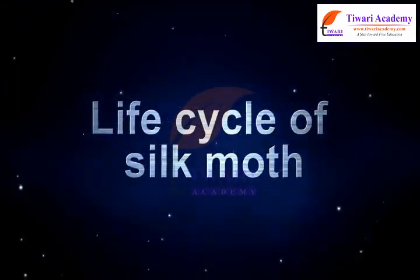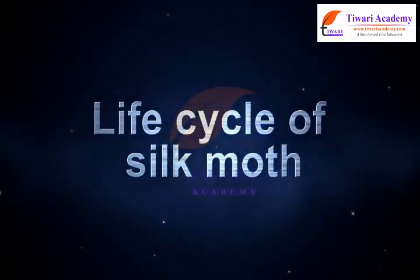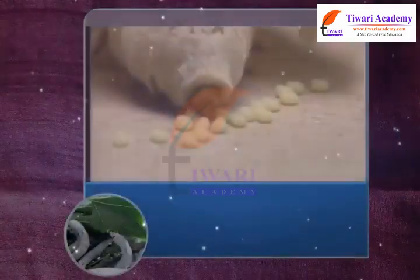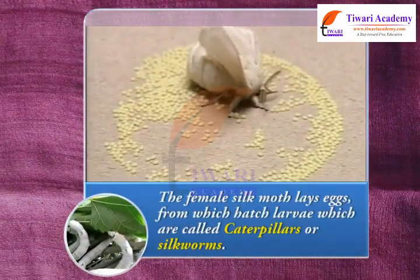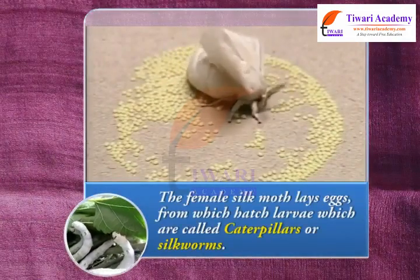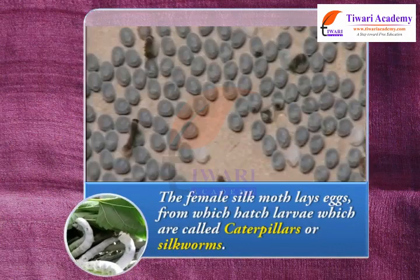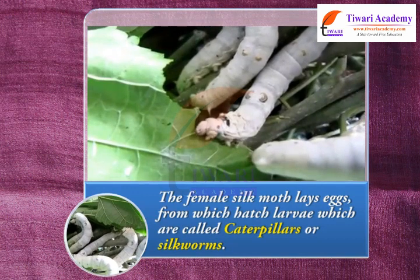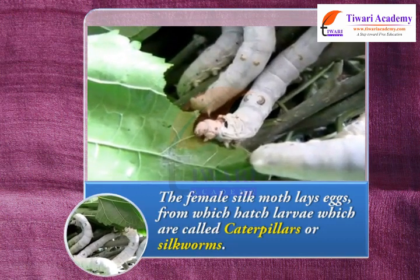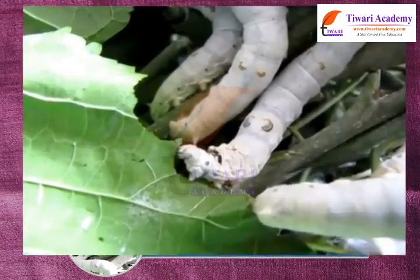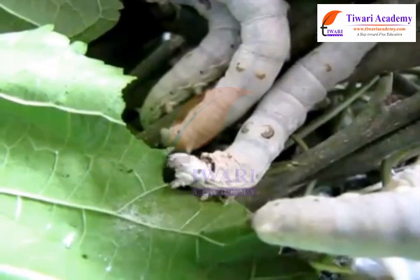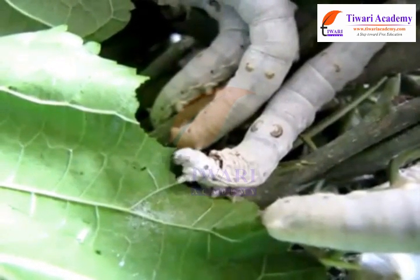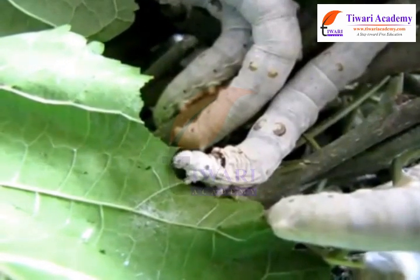Life Cycle of a Silk Moth. The female silk moth lays eggs from which hatch larvae, which are called caterpillars or silkworms. They grow in size and when the caterpillar is ready to enter the next stage of its life cycle, called pupa.